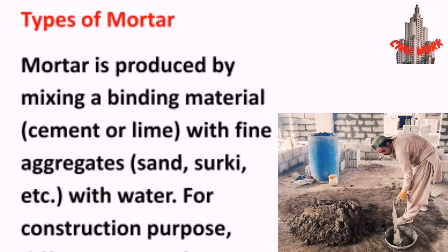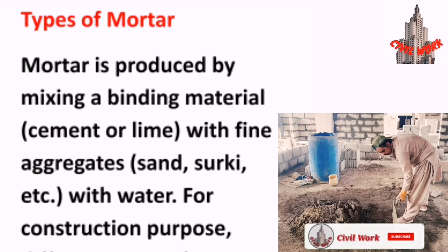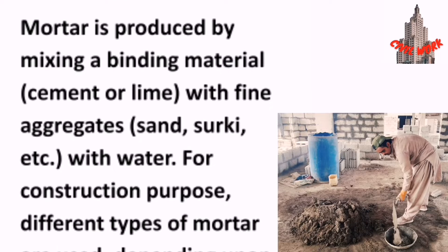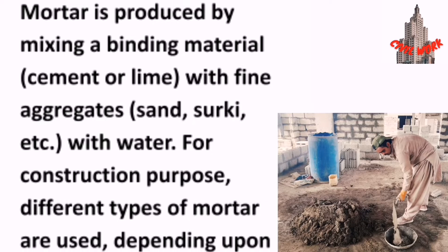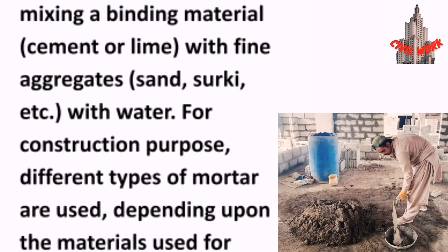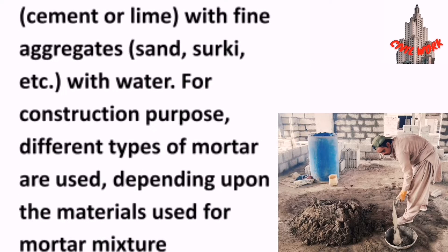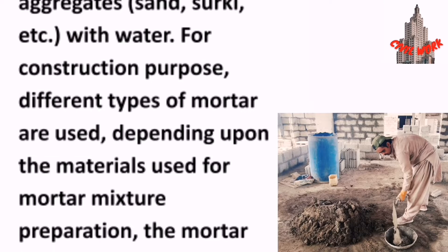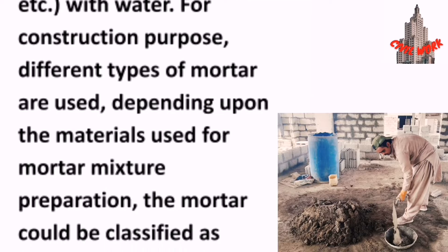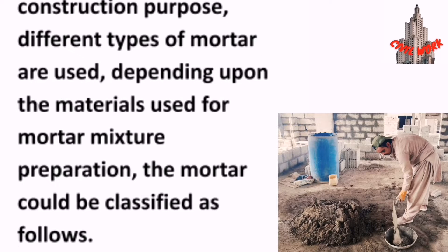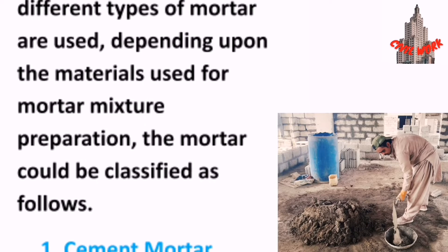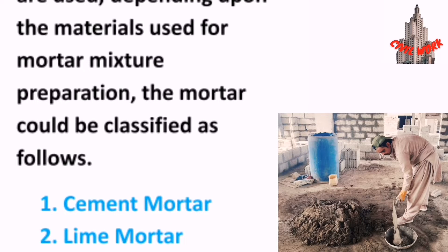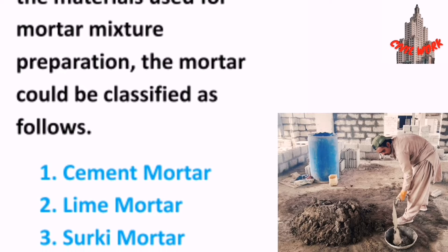Types of Mortar. Mortar is produced by mixing a binding material — cement or lime — with fine aggregates and water. For construction purposes, different types of mortar are used. Depending upon the materials used for mortar mixture preparation, mortar could be classified as follows.